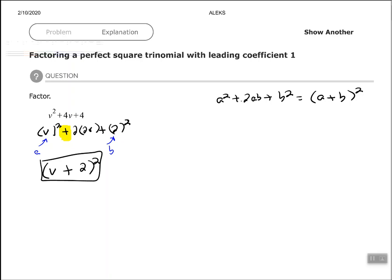But the other perfect square trinomial is in the form of a squared minus 2ab plus b squared. And that would equal a minus b squared. So if that second term is negative, but it's still in the same form, then it will factor to a minus b squared.